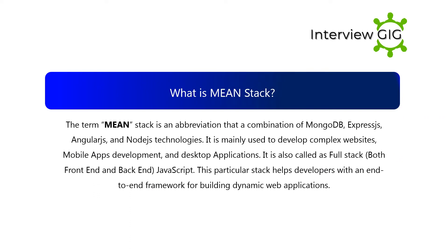What is MEAN stack? The term MEAN stack is an abbreviation of a combination of MongoDB, Express.js, Angular.js, and Node.js technologies. It is mainly used to develop complex websites, mobile apps, and desktop applications. It is also called a full stack — both front-end and back-end JavaScript.